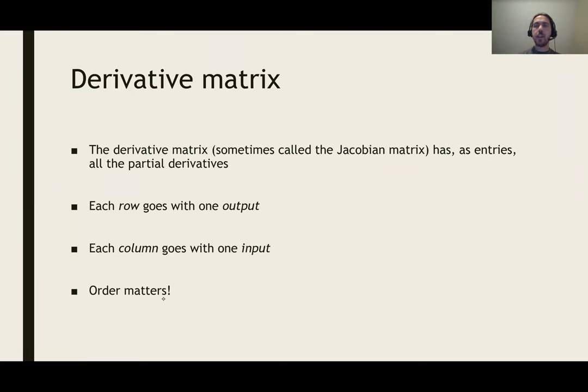We'd like to know how to calculate this derivative matrix that gives us the linear approximation. The derivative matrix turns out to have as its entries every single possible partial derivative of every output of the function with respect to every input. So all the ways that we can combine those, we throw those into a grid of numbers.